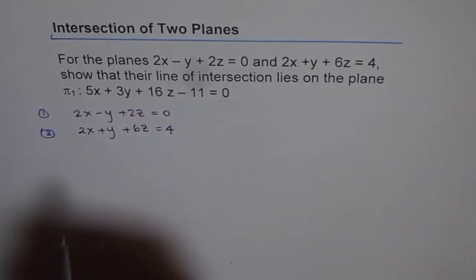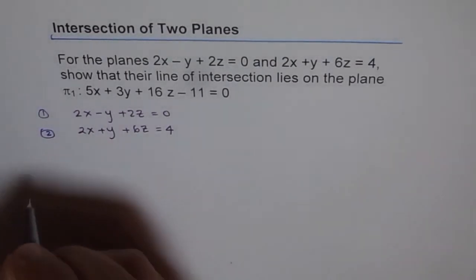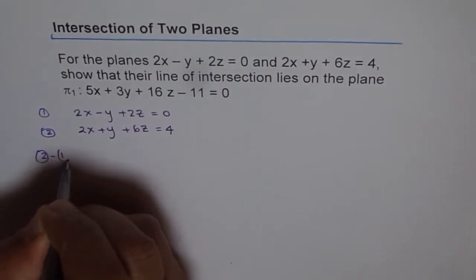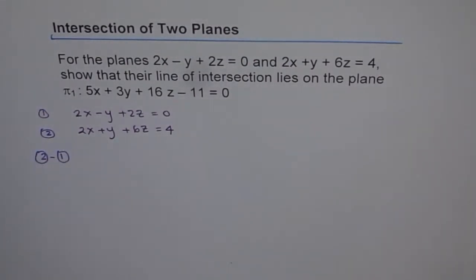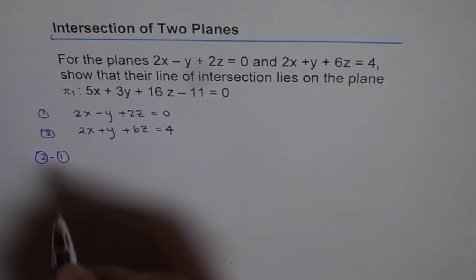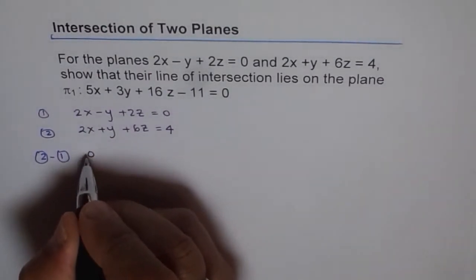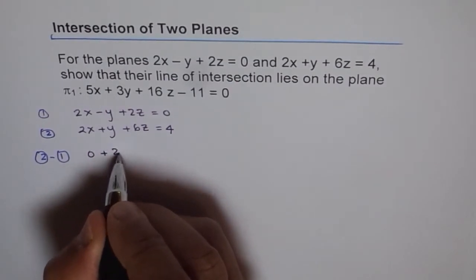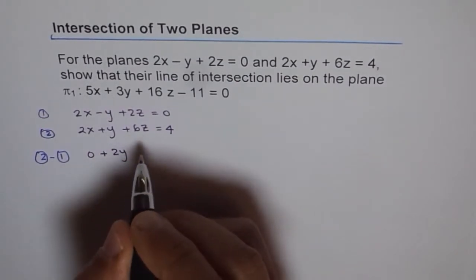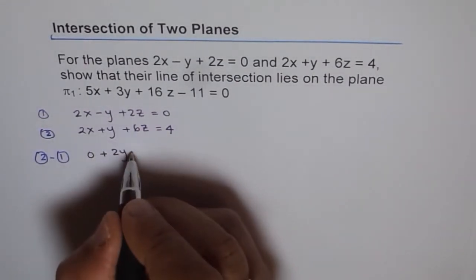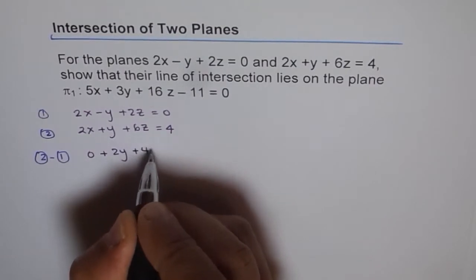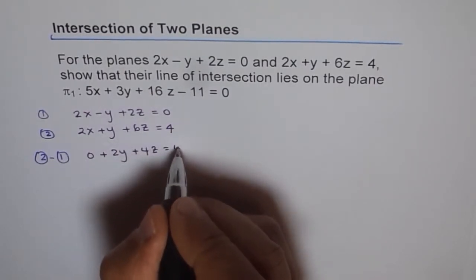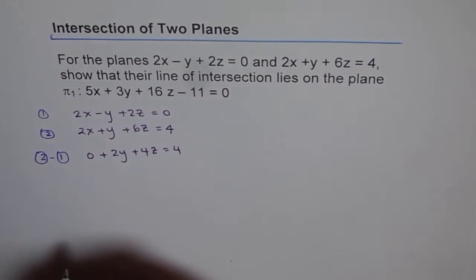If I do equation number 2 minus 1, I get 0 for the x terms, plus 2y, and plus 4z on the left, and 4 minus 0 is 4 on the right.